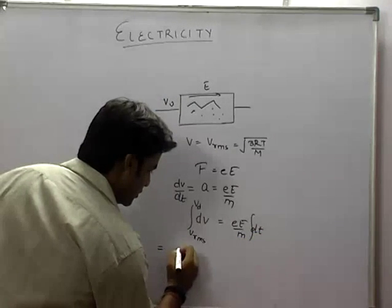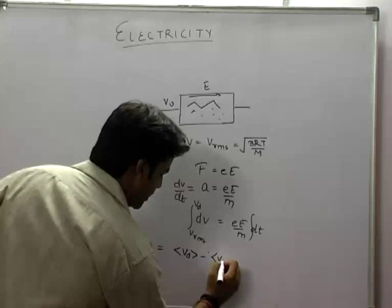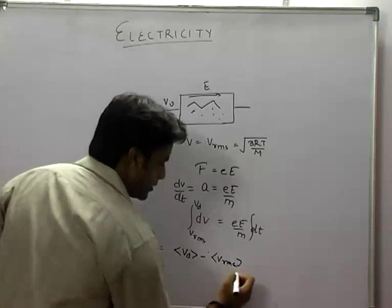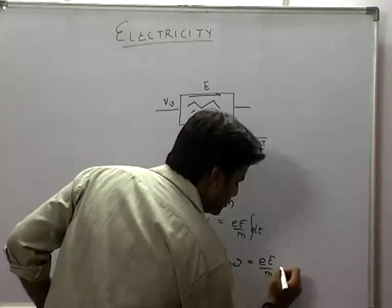This value will equal net vd minus net v_rms is equal to e into E by m into tau.